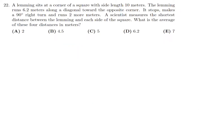A lemming sits at a corner of a square with a side length of ten. The lemming runs 6.2 meters along a diagonal toward the opposite corner, stops, makes a 90-degree turn, and runs two more meters. A scientist measures the shortest distance between the lemming and each side of the square. What is the average of these four distances in meters?